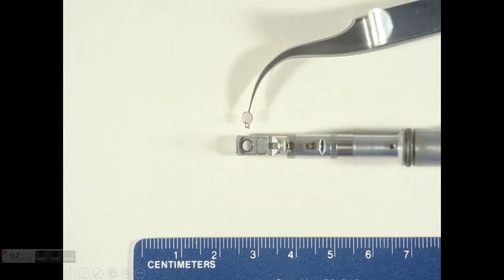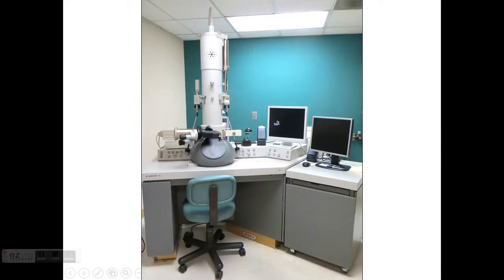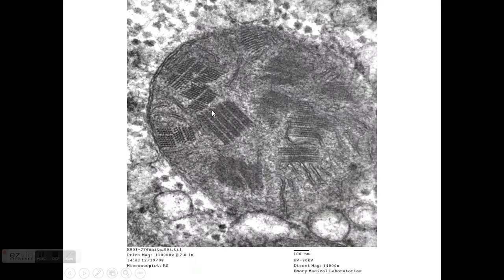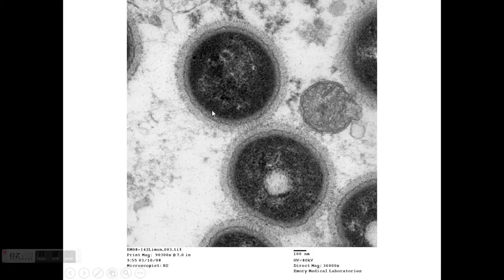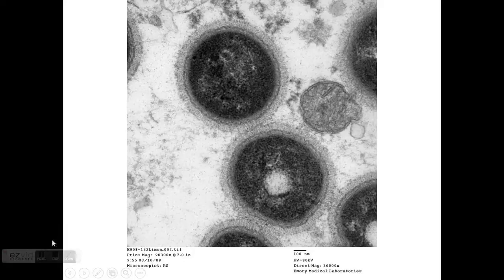You put the grid into a holder and then insert the holder into the electron microscope, where you can view sections of different tissues and look at different structures — for example, viral structures. This is what we use for kidney biopsy processing covering light microscopy, immunofluorescence, and electron microscopy. Thank you so much for watching this video.